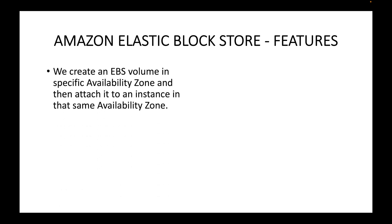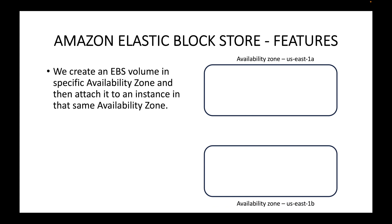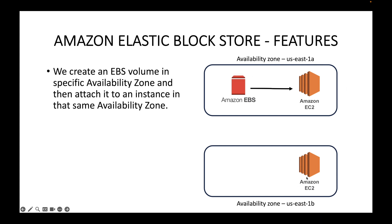You can create an EBS volume in a specific Availability Zone and attach it to an instance in that same Availability Zone. This is a very important point: the EBS volume and the EC2 instance must be in the same Availability Zone. For example, if you have us-east-1a and us-east-1b, a volume in one zone cannot by default be attached to an instance in another zone — cross-Availability Zone connections are not supported by default.